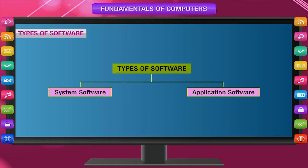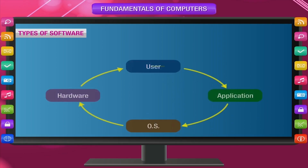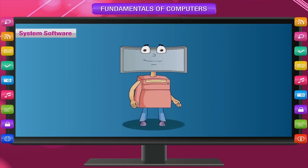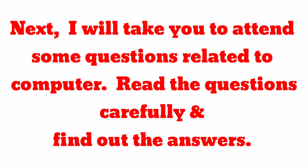Computer software is mainly classified into two types: system software and application software.